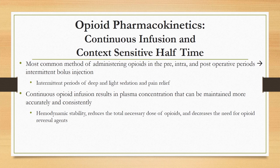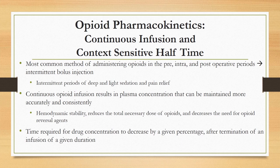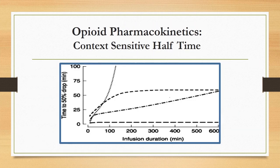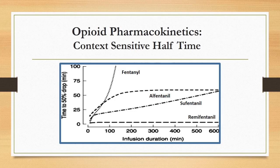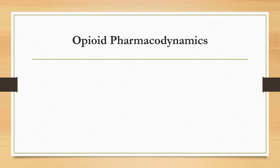Nurses should consider using continuous infusions for patients requiring high doses or multiple doses of opioid medications in the PACU. When choosing opioid infusion medications, it is important to consider the drug's context-sensitive half-time — the time required for the drug concentration to decrease by a given percentage after termination of an infusion of a given duration. This allows for rational drug selection based on anticipated infusion duration. On the graph, fentanyl has a much longer context-sensitive half-time than alfentanil, sufentanil, and remifentanil, due mainly to its high lipophilicity.